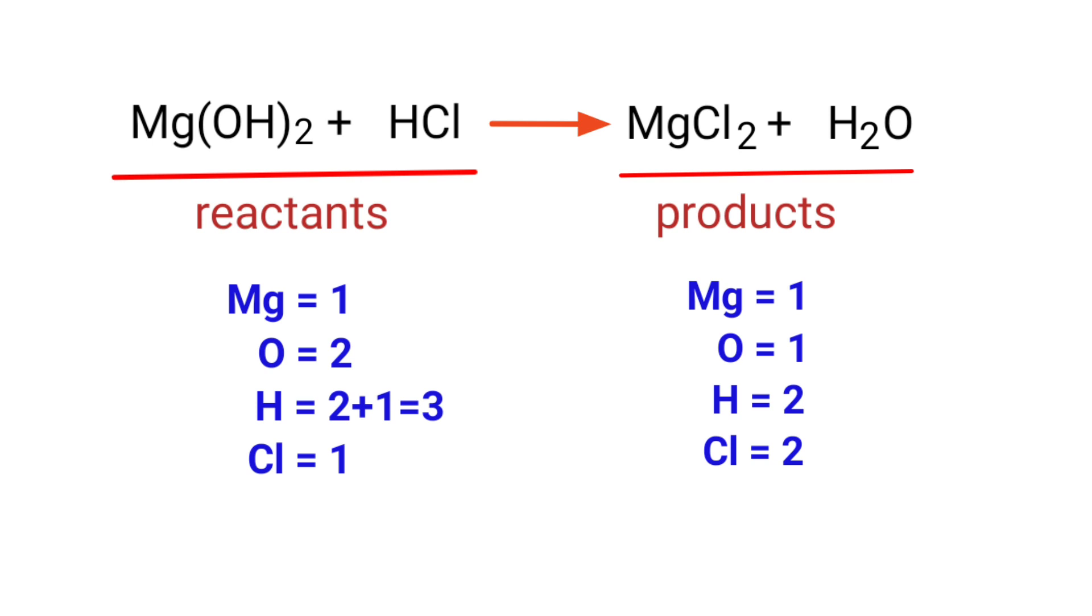In this equation, we need to balance the Oxygen atoms first. To do this, we need to put a coefficient of two in front of H2O. The Oxygen atoms are balanced.